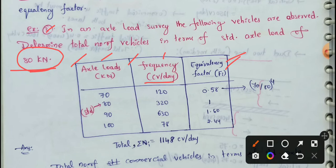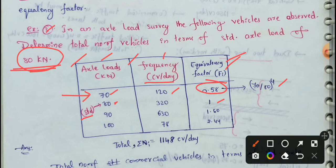For the first case, the axle load is 70 kN with a frequency of 120 CVPD (commercial vehicles per day). The equivalency factor is (70/80)^4 = 0.58. For the second case, the axle load is 80 kN; EF = (80/80)^4 = 1.0. For the third case, the axle load is 90 kN; EF = (90/80)^4 = 1.60.